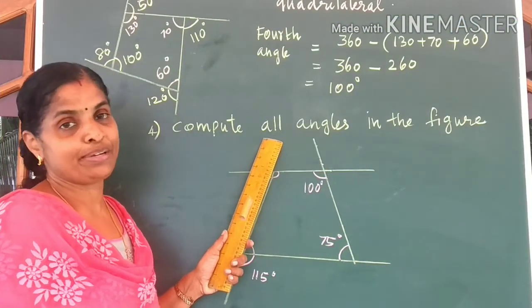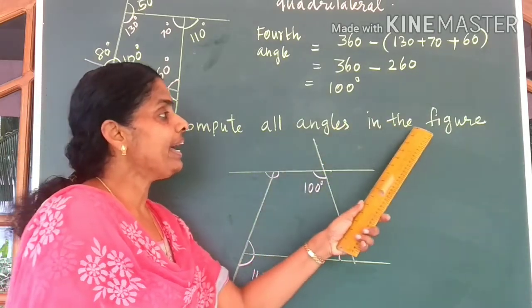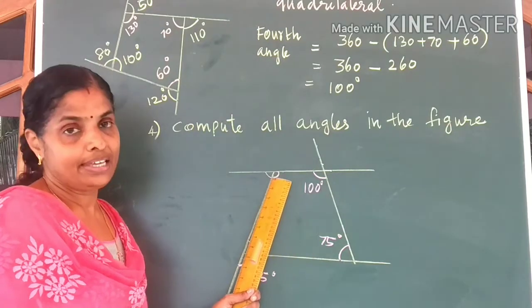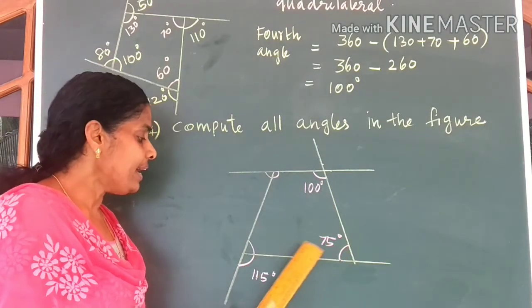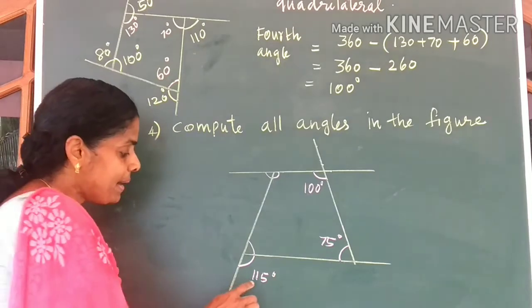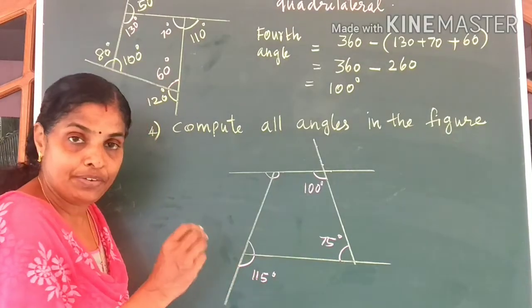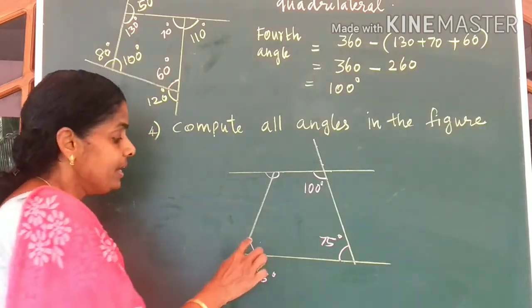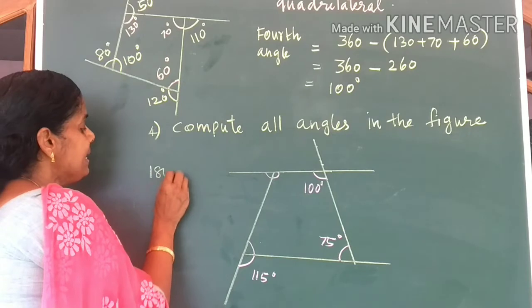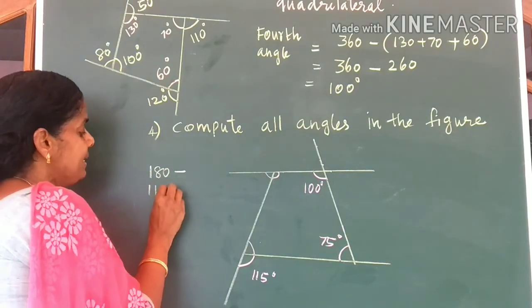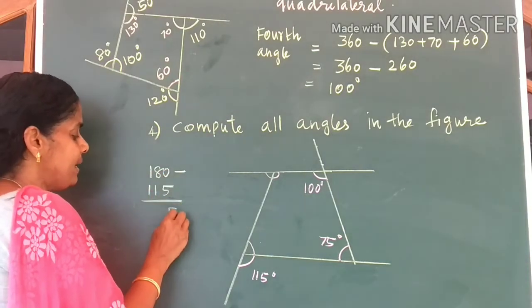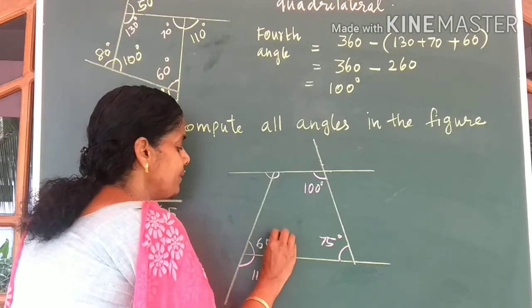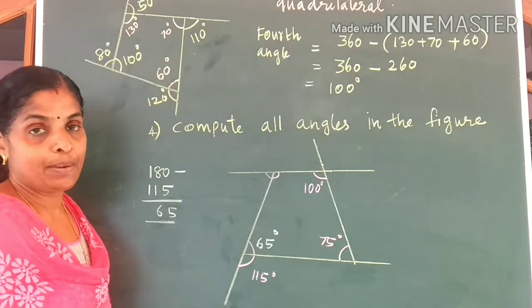Come to the fourth question. Calculate all angles in the figure. Again, you are given a four-sided figure — a quadrilateral in which three angles are marked. By looking at 115 degrees, we can write the inner angle. So the inner angle would be 180 minus 115 degrees, which gives you 65 degrees.